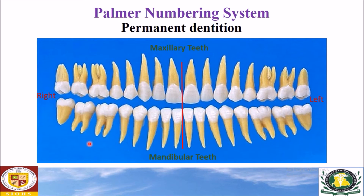The maxillary right central incisor is given the number one in the Palmer notation system. Number one is used for every central incisor, whether in the maxillary or mandibular arch. In order to distinguish it from the other central incisors, we draw a symbol indicating it is of the maxillary right quadrant.